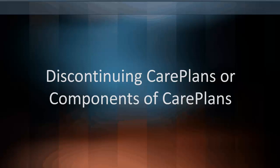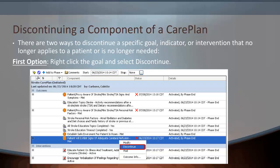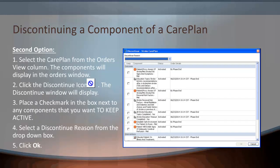We will now cover the final section: discontinuing care plans or components of those care plans. There are two ways to discontinue a specific goal, indicator, or intervention that is no longer applicable or needed. Your first option is to right-click the goal and select Discontinue. Your second option contains about five steps: Number one, select the care plan from the orders view column — the components will display in the orders window. Number two, click on the discontinue icon. Number three, place a check mark in the box next to any components you want to keep active. Number four, select the discontinue reason from the drop-down box and click OK. Be very careful because every check mark is something you keep — leaving it blank indicates you are discontinuing it.